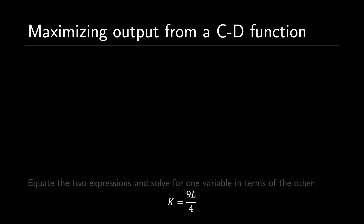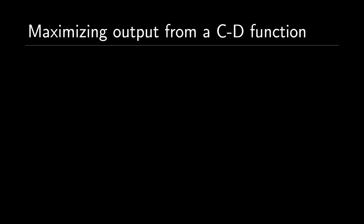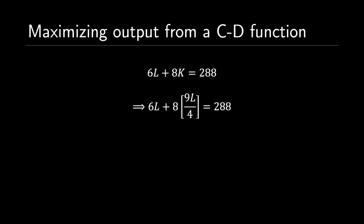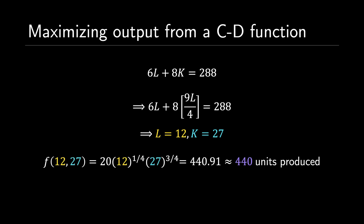Finally, we plug K equals 9L over 4 into our constraint to solve for L and K, getting L equals 12 and K equals 27. Thus, by using 12 units of labor and 27 units of capital, we maximize our production to approximately 440 units produced.